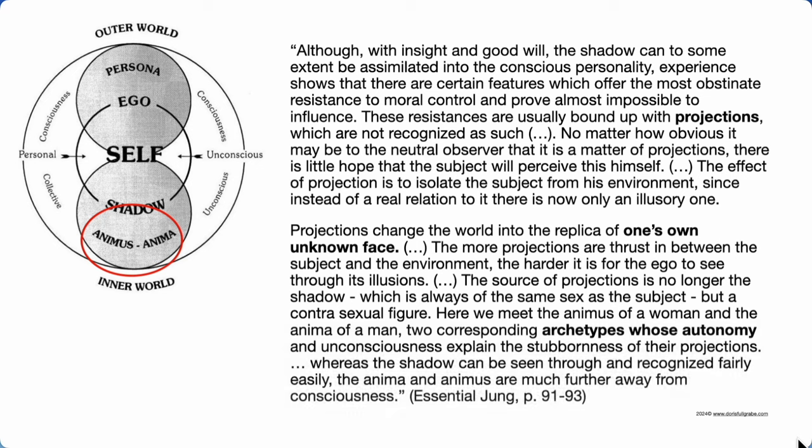The source of projections is no longer the shadow — which is always of the same sex as the subject — but the contrasexual figure: the animus of a woman and the anima of a man. Whereas the shadow can be seen through and recognized fairly easily, the anima and animus are much further away from consciousness. If you don't empty out your shadow backpack every once in a while, your anima and animus weight will not only drag you backwards, it'll also separate you from your ego consciousness and real life. Repeating life patterns are your unconscious's way of showing you there's a lesson to be learned here.